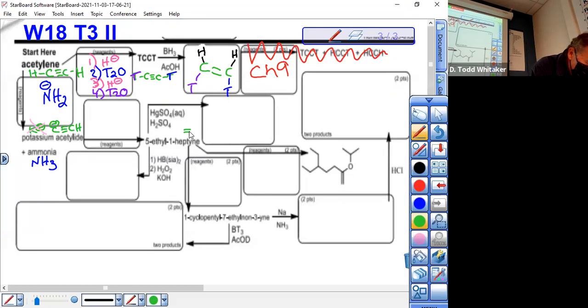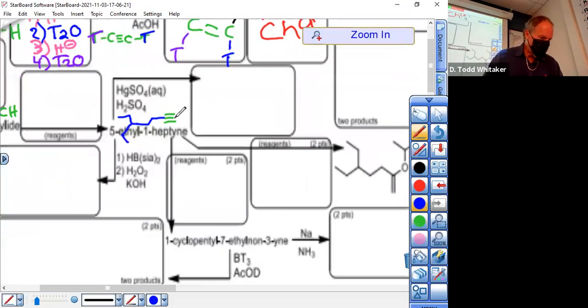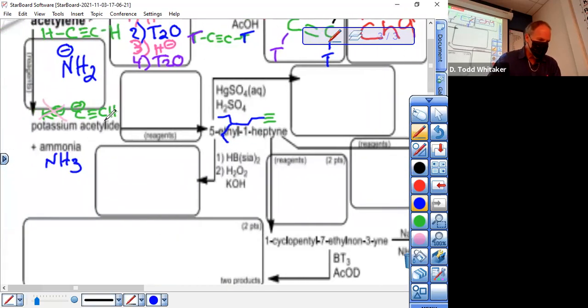Now, potassium acetylide needs to become 5-ethyl-1-heptyne. So here's heptyne: one, two, three, four, five, six, seven. And 5-ethyl: one, two, three, four, five. It's there. Ethyl, not methyl. Do we agree that's 5-ethyl-1-heptyne?